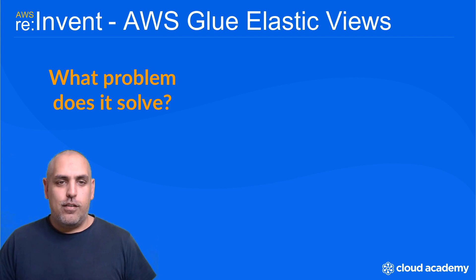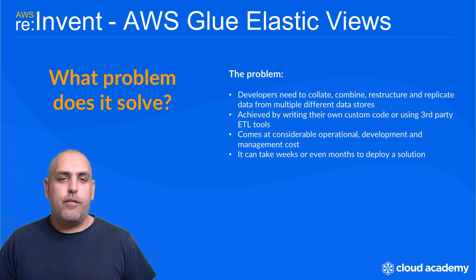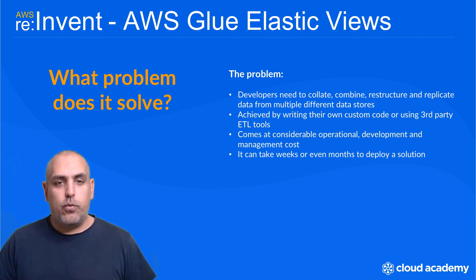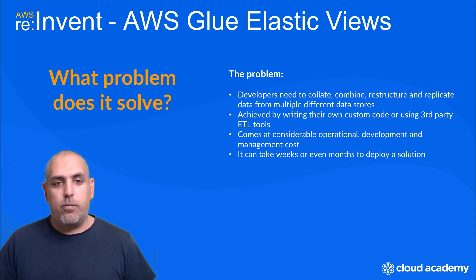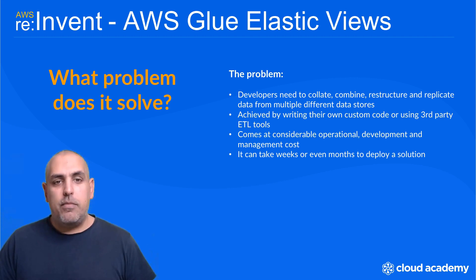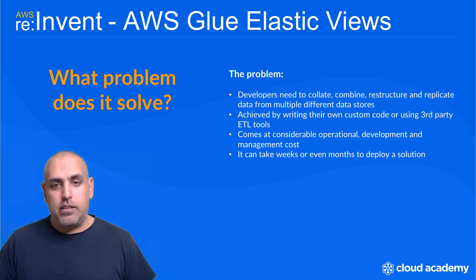So what problem does it solve? Well, sometimes developers will have a need to collate, combine, restructure, and replicate data from multiple different data stores within AWS. This is often achieved by writing their own custom code or using third-party ETL tools to manipulate the data as required. However, this can come at a considerable operational, development, and management cost where developers can be spending weeks or even months deploying such a mechanism.